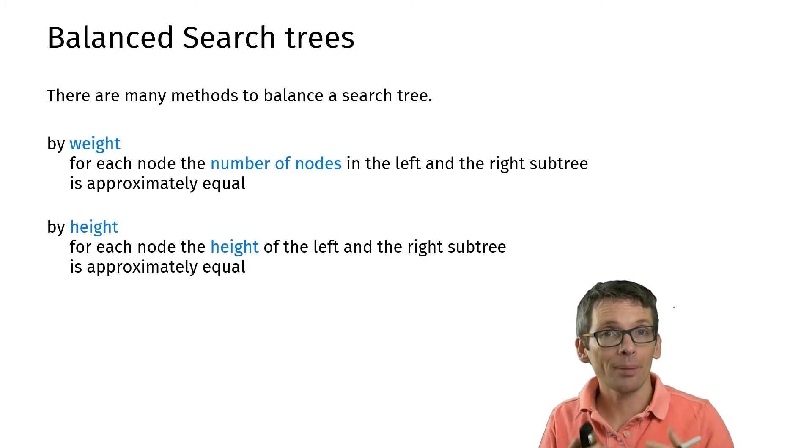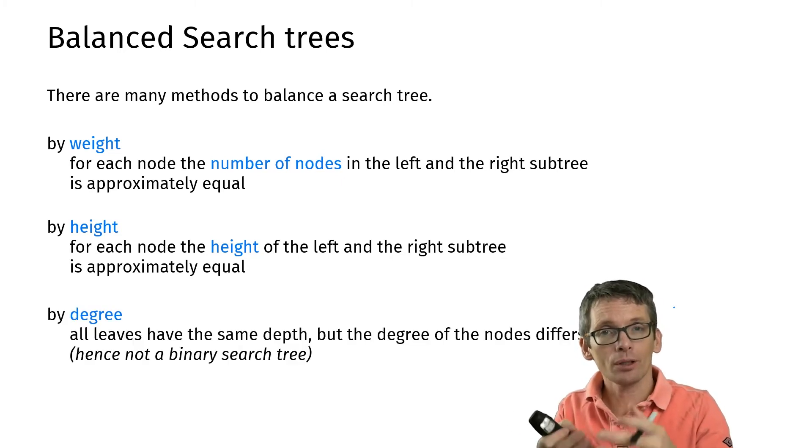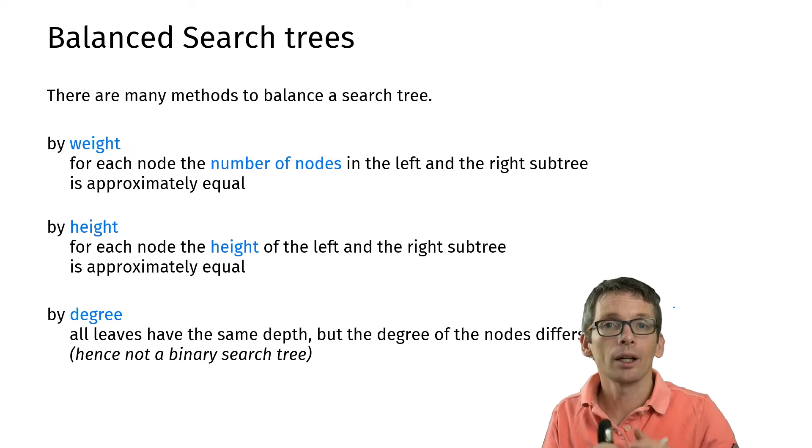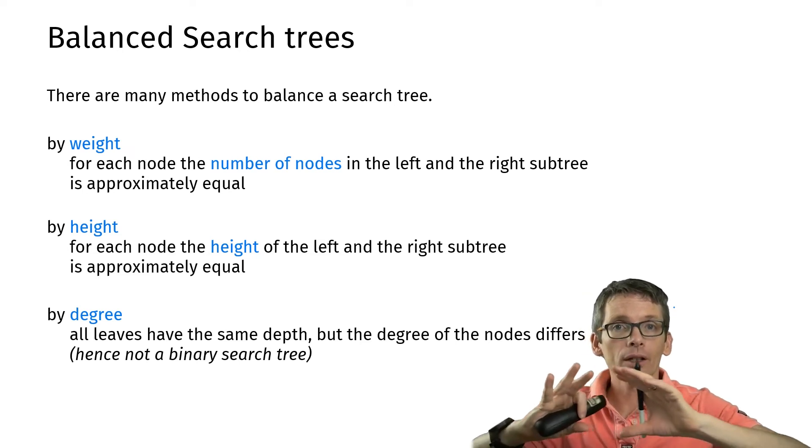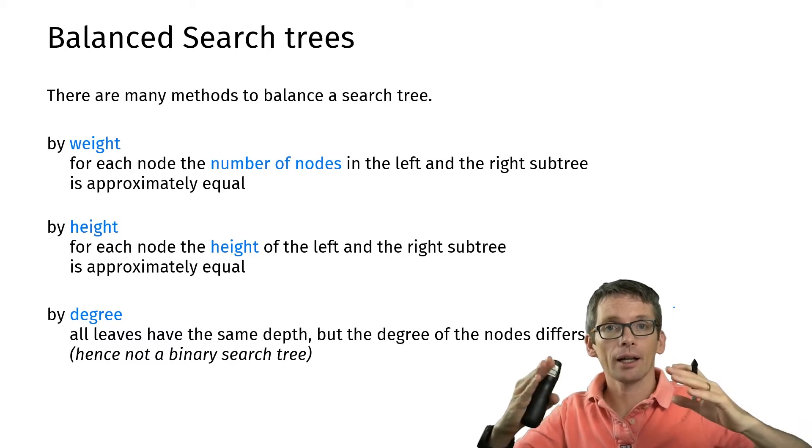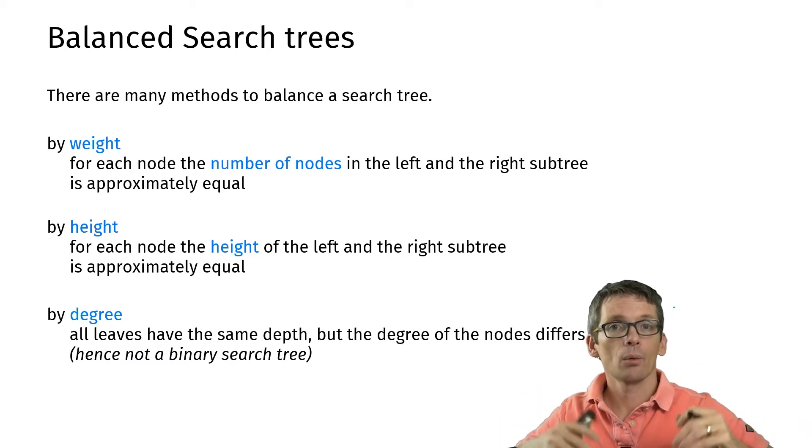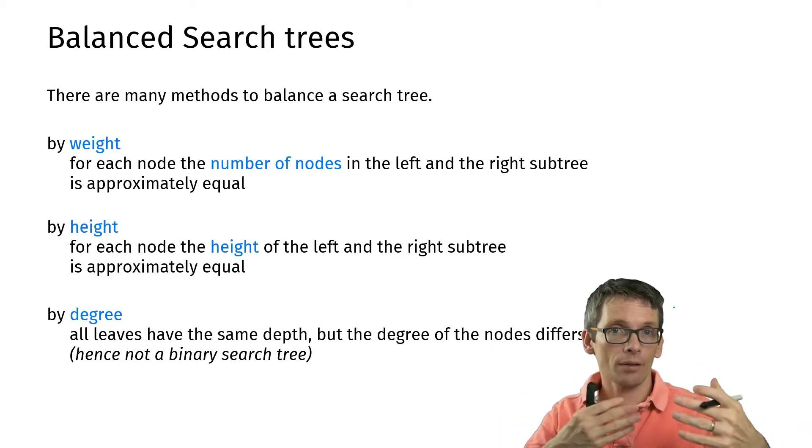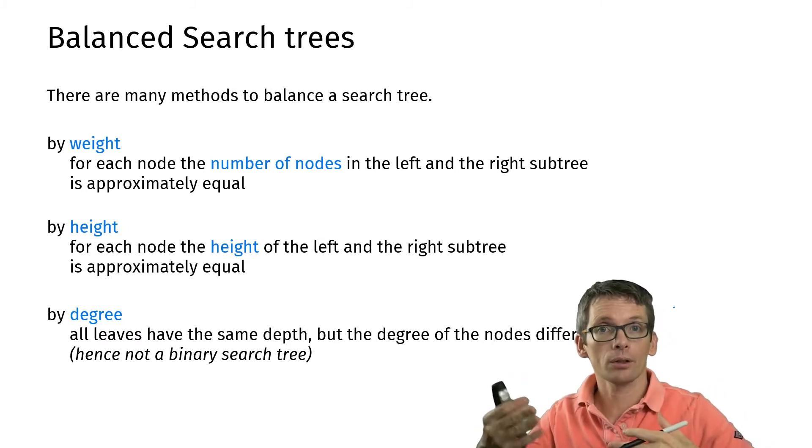I can also balance by degree. So this is not for binary search trees because otherwise it wouldn't work, but here I want to make sure that all the leaves have the same depth and I allow myself some leeway with the degree, so not having necessarily a degree of two but for instance also a degree of three.